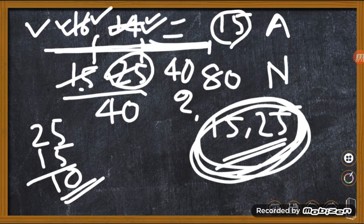The average age of seven boys sitting in a row facing north is 26 years. If the average age of the first three boys is 19 years and the average age of the last three boys is 32 years, what is the age of the boy sitting in the middle of the row?